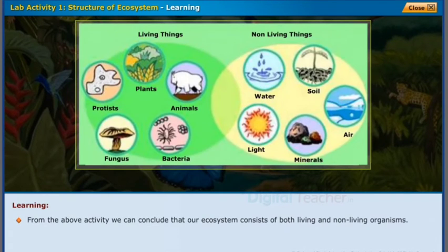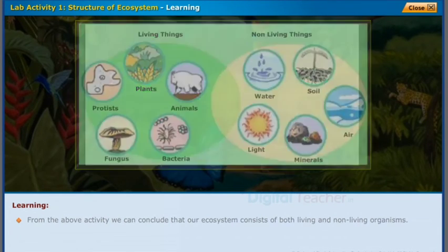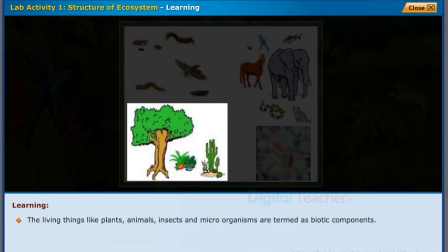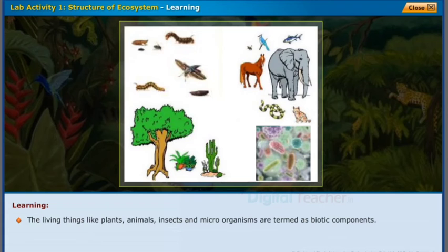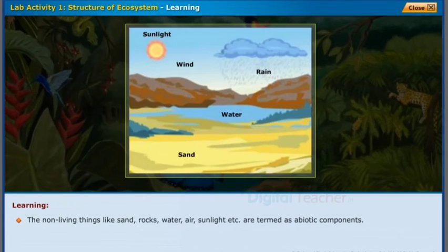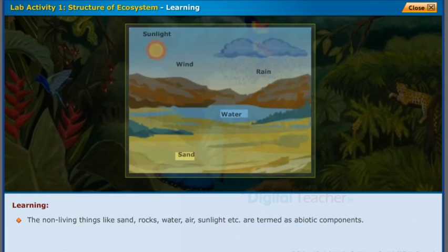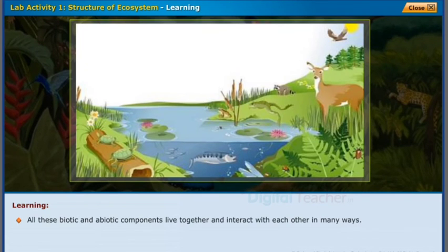From the above activity, we can conclude that our ecosystem consists of both living and non-living organisms. The living things like plants, animals, insects, and microorganisms are termed as biotic components. The non-living things like sand, rocks, water, air, sunlight, etc., are termed as abiotic components. All these biotic and abiotic components live together and interact with each other in many ways.